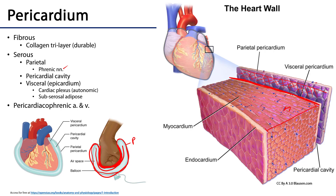The pericardium is supplied by blood via the pericardiacophrenic artery and vein, which are proximal branches of the internal thoracic artery and veins, running down between the mediastinum and the pleura.